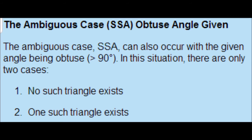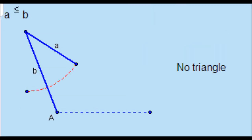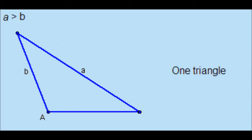For the ambiguous case with a side-side-angle configuration: if the angle is greater than 90 degrees (obtuse), you only have two possibilities — no triangle exists, or one triangle exists. If A is less than or equal to B, no triangle exists. If A is greater than B, one triangle exists.